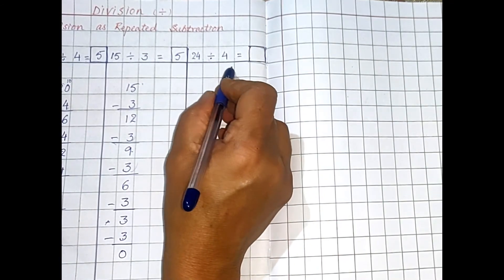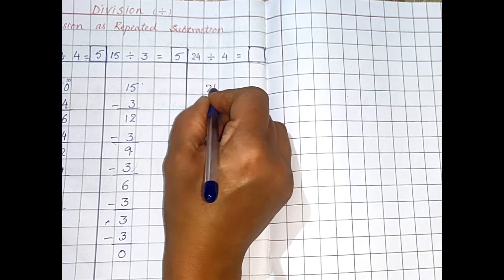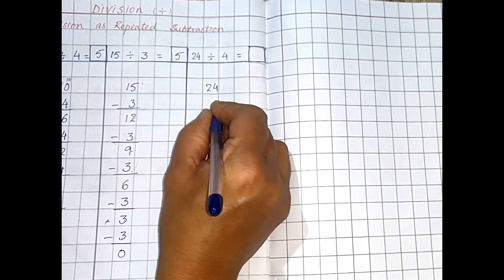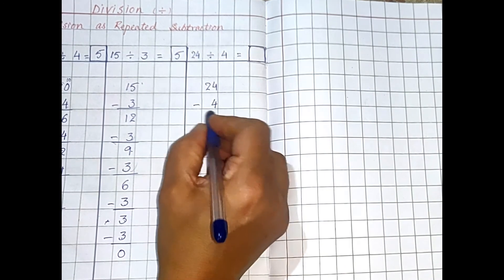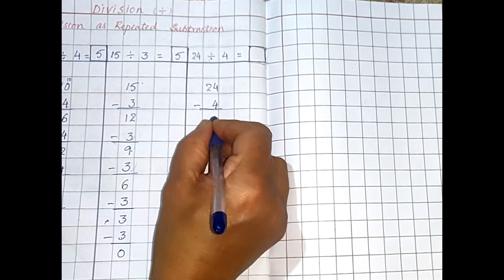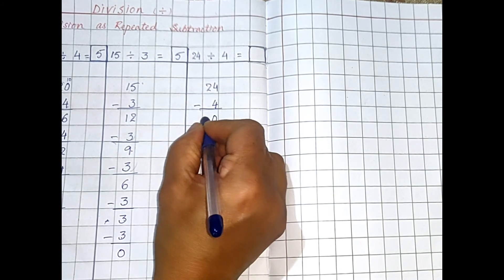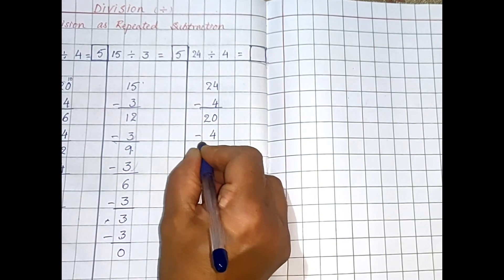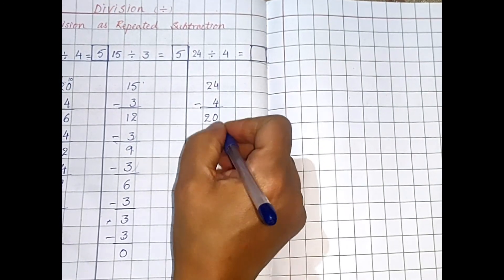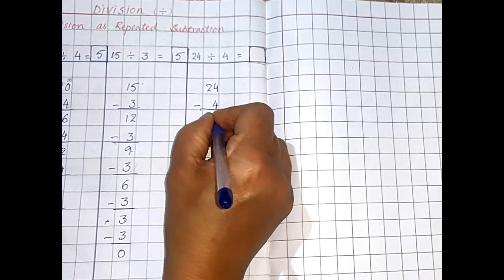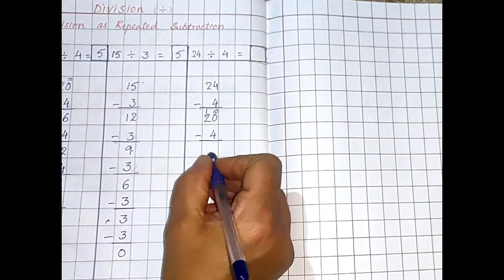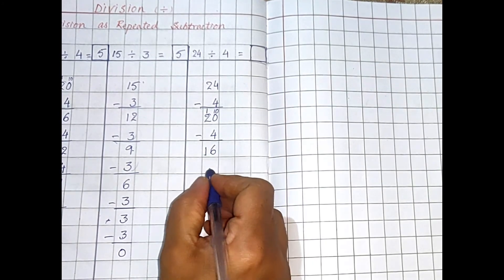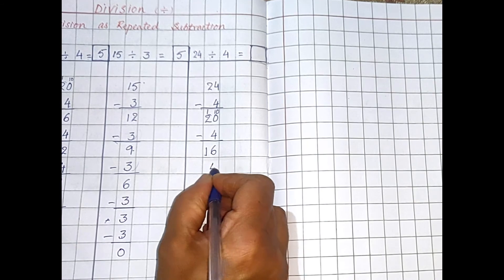Let us do the last sum: 24 divided by 4. Write 24 here. Minus 4: 4 minus 4 is 0, so the 2 carries over. Again minus 4: from 0, 4 will not go, so borrow and make it 10, this becomes 1. So 10 minus 4 is 6, and the 1 carries, giving 16.